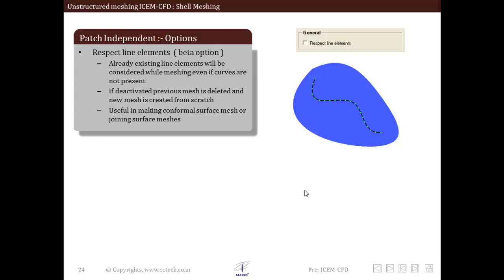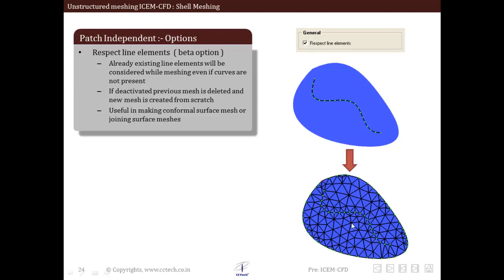Now we will discuss the options available within the patch independent method. First is the respect line elements option. In this, already existing line elements will be considered while meshing even if curves are not present. If this is deactivated, the previous mesh is deleted and a new mesh is created from scratch. This is useful in making conformal surface mesh or joining surface meshes. When this option is activated, the existing line elements are respected and the mesh is conformal with that particular line element.